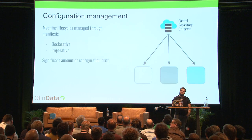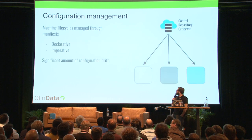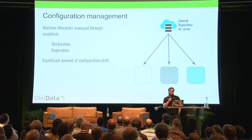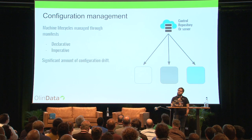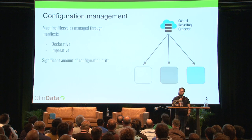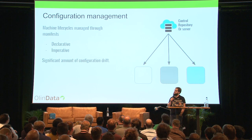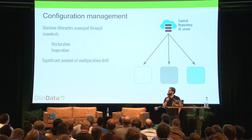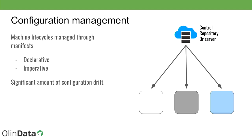In an effort to combat this configuration drift, we created configuration management tools. They allow us to make changes to our infrastructure through versionable manifest files, and that way we reduce configuration drift a little bit.